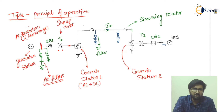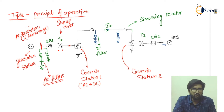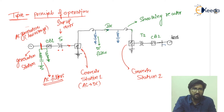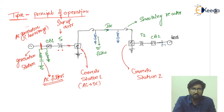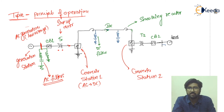The stepped-up AC is then transmitted to converter station one, where the conversion from AC to DC occurs. This process introduces pulsations — harmonics that are not desirable. The smoothing reactor minimizes these pulsations, and the DC filter further minimizes oscillations in the DC output.